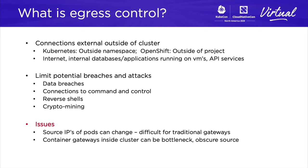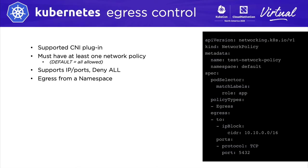This makes it difficult for traditional firewalls or gateways that need a source IP address to base their policies on. If you're trying to funnel all your traffic through a gateway inside of the cluster in order to egress, that too can become a bottleneck and can create performance issues or even obscure the source or content of the requesting service. A pod needs to be identified by labels or service names instead of IP addresses.